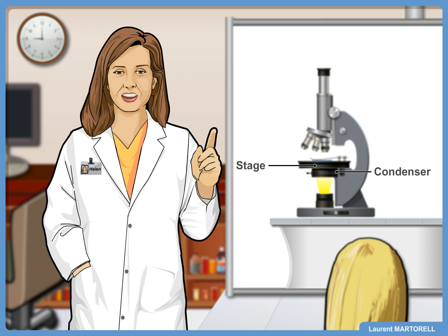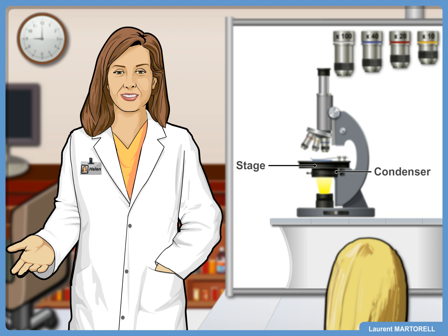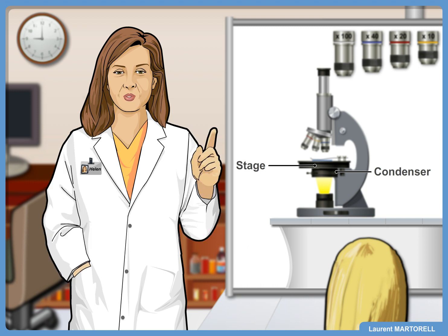Let's move on to the next part: the objectives. Most compound microscopes have three or four objectives which are attached to the nose piece. What is the number written on the side of the objectives? The number indicates how much the object is magnified.